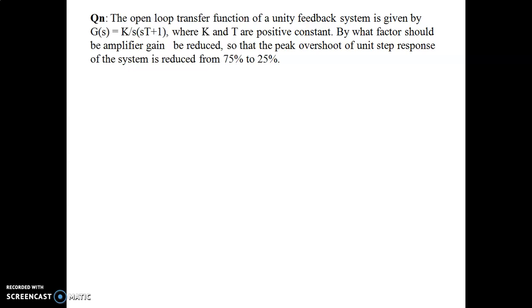This question is a little twisted compared to the general problems we've done in class. It is a unity feedback system with G(s) given, and K and T are positive. We need to find by what factor the value of K should be reduced so that the peak overshoot of the unit step response is reduced from 75% to 25%.